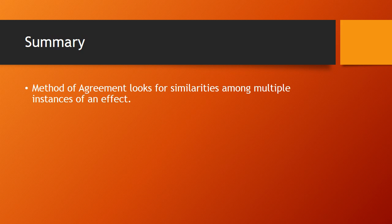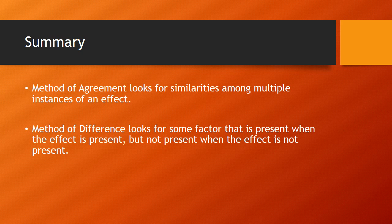Let's summarize what we've learned in this tutorial. We've covered method of agreement reasoning, in which we look for similarities among multiple occurrences of an effect. And we've learned about method of difference reasoning, in which we look for some factor that is present when the effect is present, but not present when the effect is not present. In other words, we're looking for differences to account for this other difference called an effect. These are only two of Mill's methods of reasoning; however, these two methods of causal reasoning are the most widely used methods.